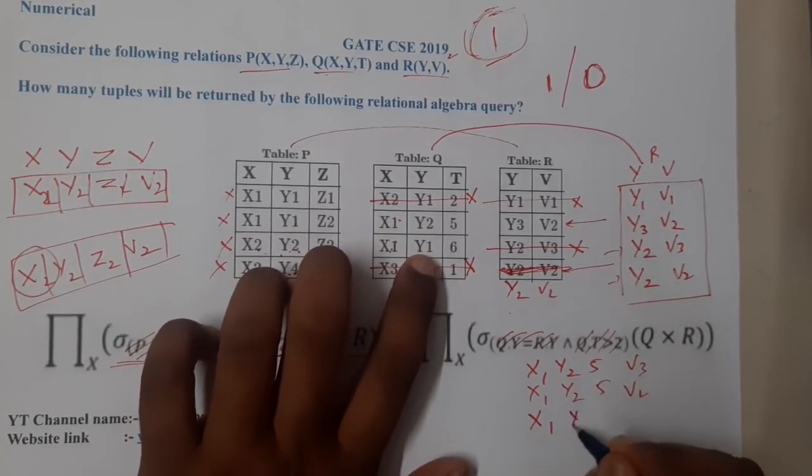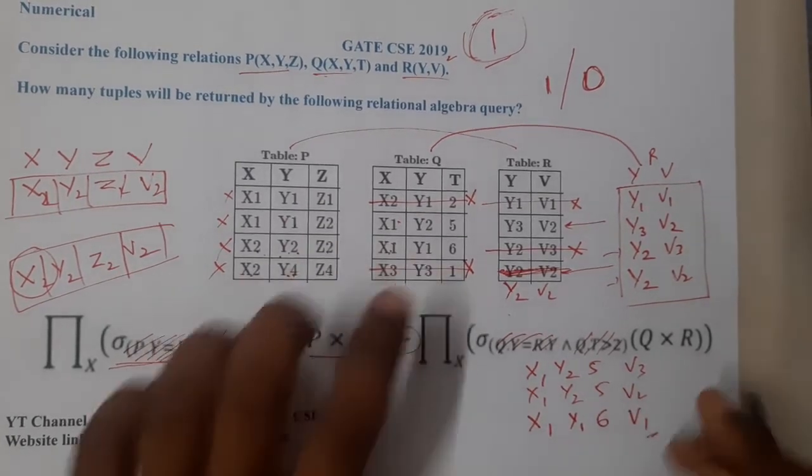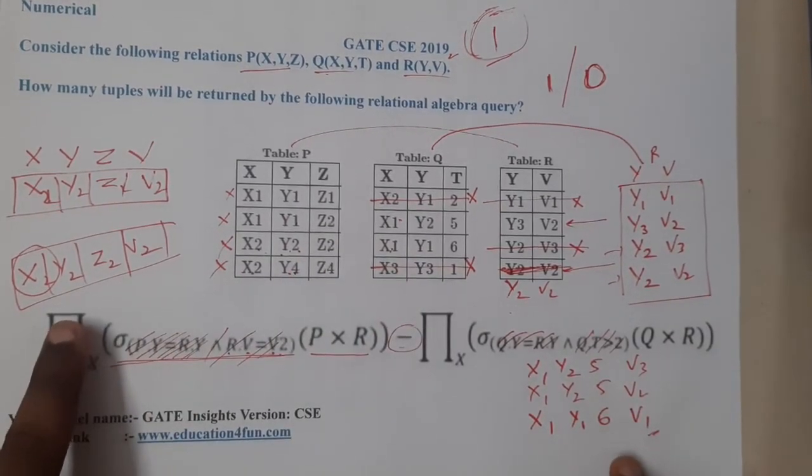Moving on to this, Y1. So we are having only one Y1. So X1, Y1, Y1, 6 with V1. So this is the result.